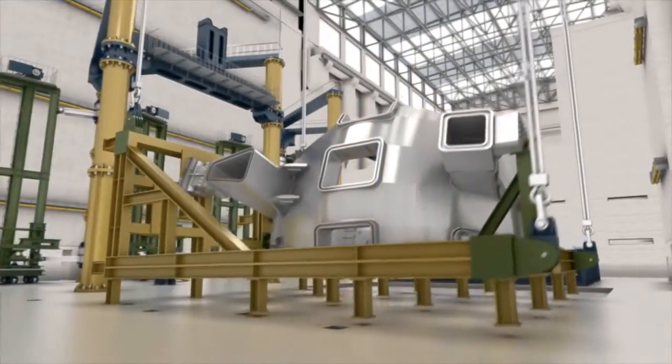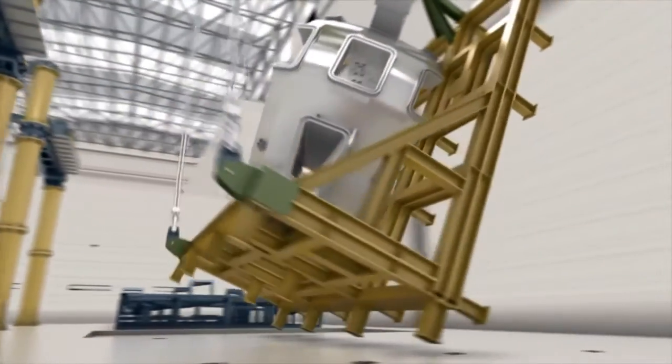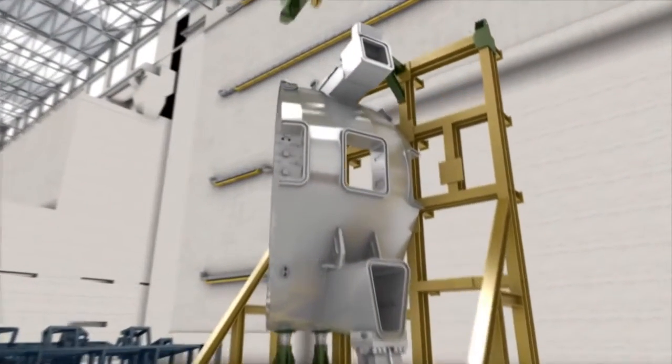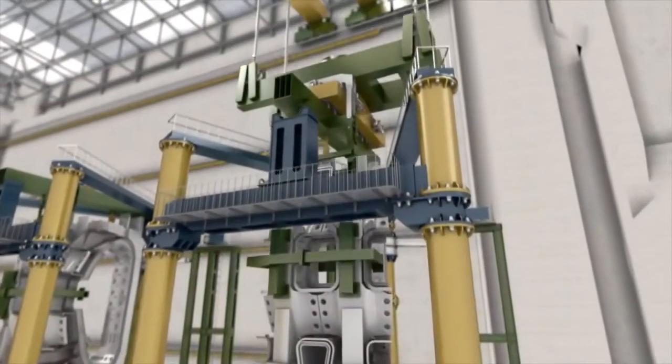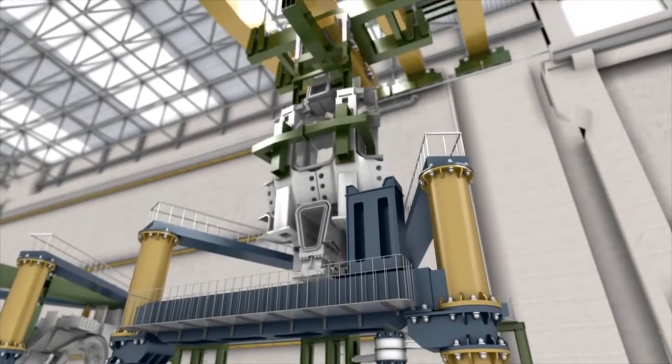The tools will have loading capacities that vary from 500 tons for the upending tool that will turn vacuum vessel components from horizontal to vertical, to 1,500 tons for the heavy lifting tools, used to lift the sub-assembled sectors into the tokamak pit for final assembly and welding.